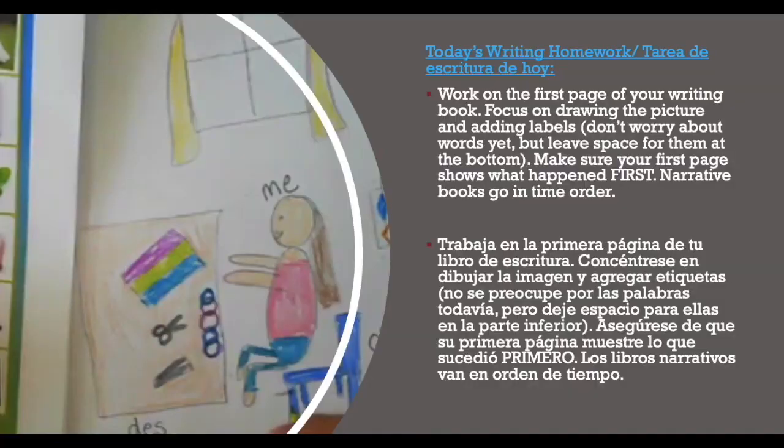Pause now to do your writing homework. Work on the first page of your writing book. Focus on drawing the picture and adding labels. Don't worry about words yet, but leave space for them at the bottom. Make sure your first page shows what happened first. Narrative books go in time order.